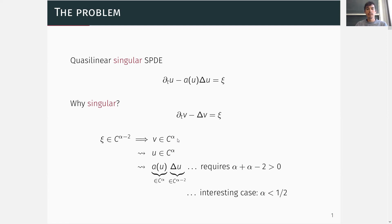Since we cannot assume that the solution to the non-linear equation has a better regularity than the solution to the linear equation, the best we can hope for is that u, which is the solution to the non-linear equation, is again in the space C^α.